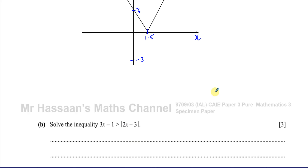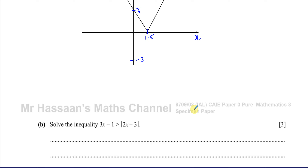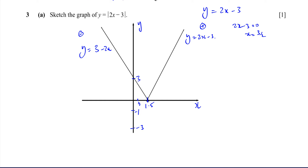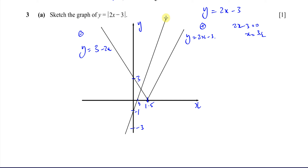Part b says solve the inequality 3x minus 1 is greater than the modulus of 2x minus 3. The way I like to solve something like this is by sketching. We've got to find where these two graphs intersect. y equals 3x minus 1 is a graph that goes through minus 1 on the y-axis with a gradient of 3, and crosses the x-axis at x equals one third. It will be steeper than the modulus graph. This is y equals 3x minus 1.